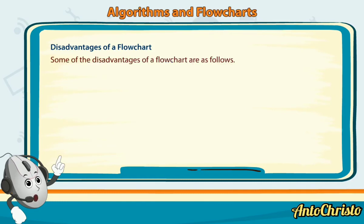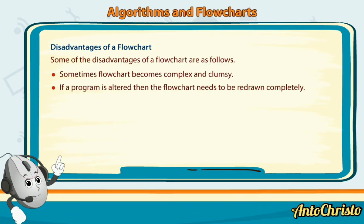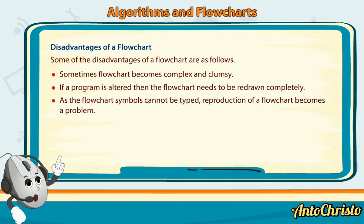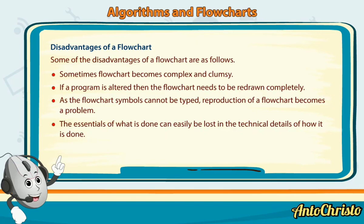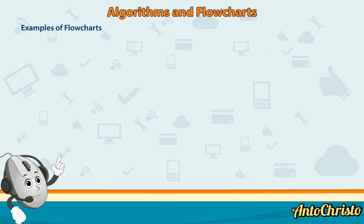Some of the disadvantages of a flowchart are as follows. Sometimes flowchart becomes complex and clumsy. If a program is altered, then the flowchart needs to be redrawn completely. As the flowchart symbols cannot be typed, reproduction of a flowchart becomes a problem. The essentials of what is done can easily be lost in the technical details of how it is done.